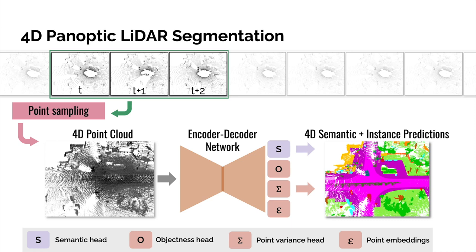In particular, we slide a fixed-size temporal window over a sequence of LiDAR sensory data. From each window, we sample a set of points to form a 4D point cloud volume. This 4D volume is the input to our encoder-decoder-based network.